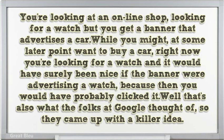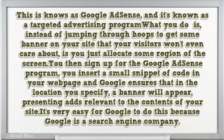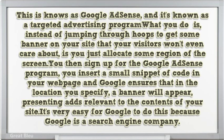That's also what Google thought of, so they came up with a killer idea. This is known as Google AdSense, and it's known as a targeted advertising program. Instead of jumping through hoops to get some banner on your site that your visitors won't even care about, you just allocate some region of the screen. You sign up for the Google AdSense program, insert a small snippet of code in your webpage, and Google ensures that in the location you specify, a banner will appear presenting ads relevant to the contents of your site. It's very easy for Google to do this because Google is a search engine company.